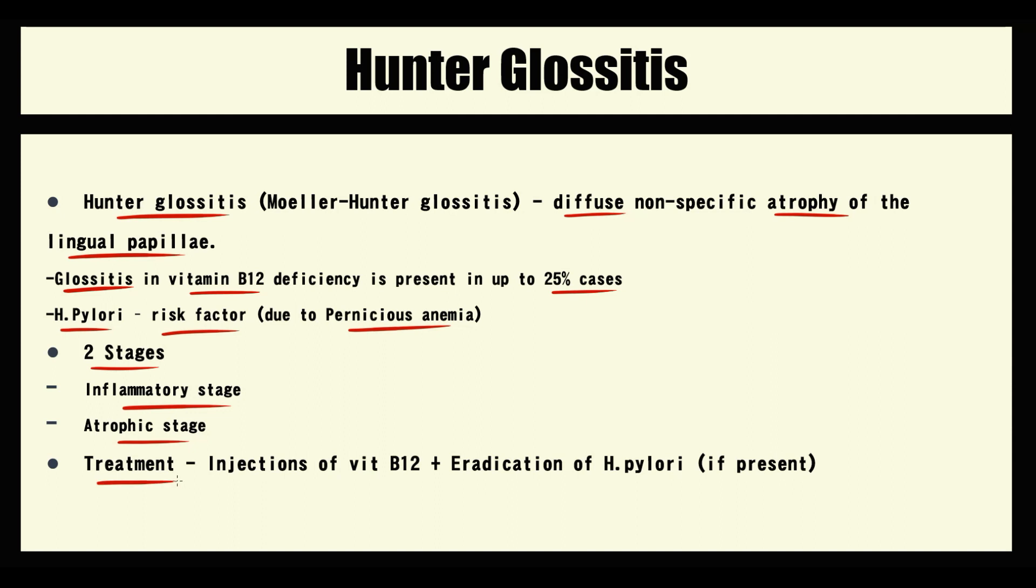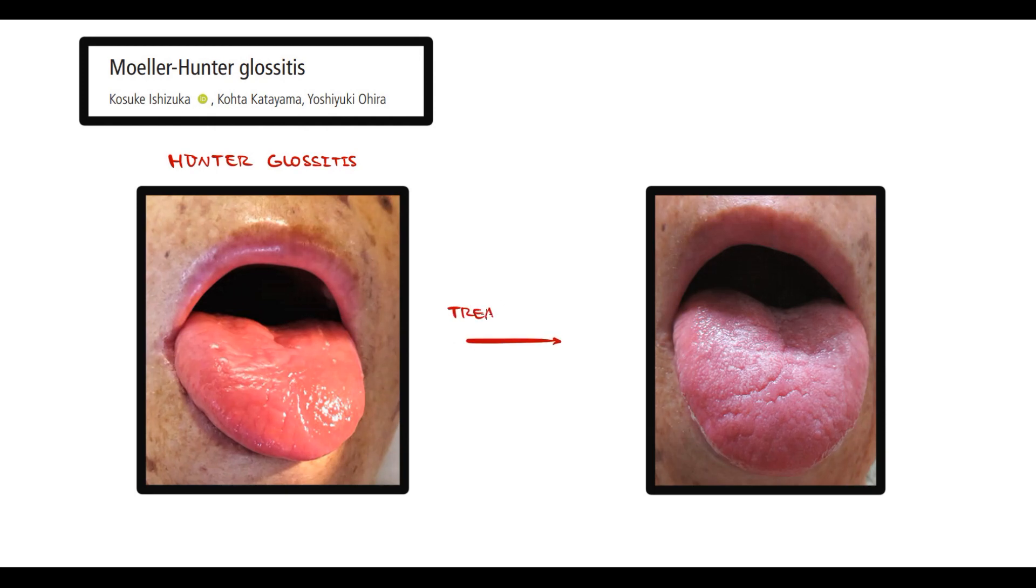The treatment is very simple. First of all, it's correction of the underlying cause, which is typically vitamin B12 deficiency. And also, if Helicobacter pylori is present, we have to prescribe eradication therapy. As we see, after treatment the appearance of the tongue comes back to normal.